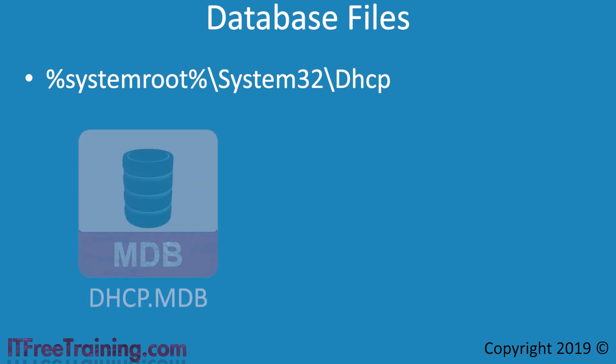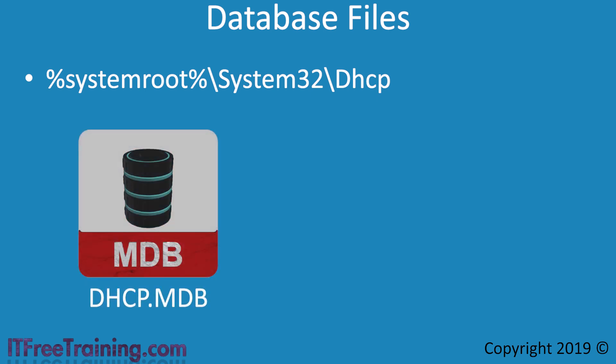The main file is the database file called DHCP.MDB. This contains all the DHCP data — for example, all the scopes, address leases, and reservations.